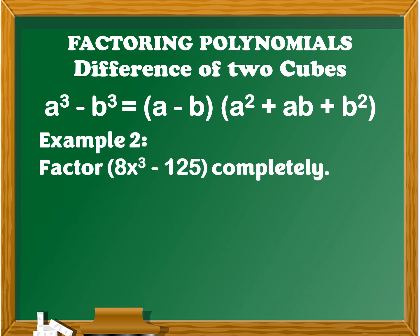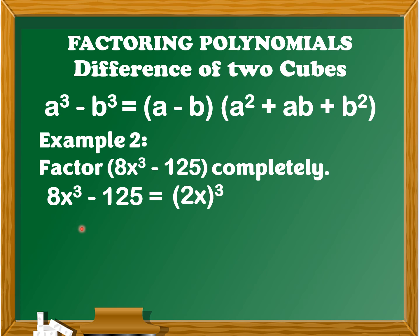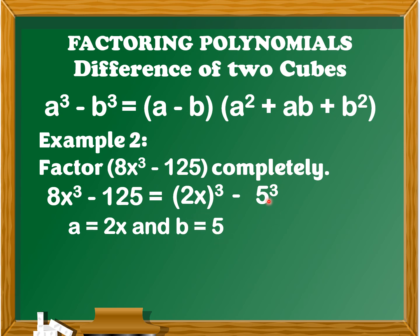Example number 2: factor 8x cubed minus 125 completely. First, we're going to write the given polynomial in the form of a cubed minus b cubed. So we have (2x) cubed minus 5 cubed, since 8x cubed is (2x) cubed and 125 is equal to 5 cubed. Next, we're going to determine the value of a and b: a is equal to 2x and b is equal to 5.